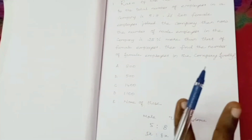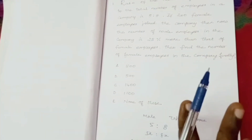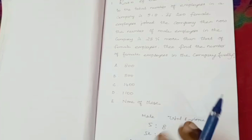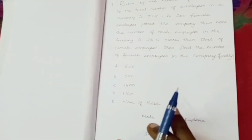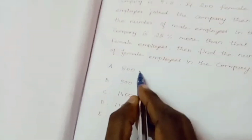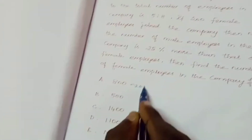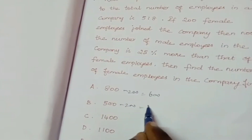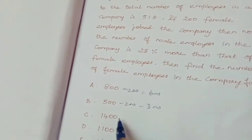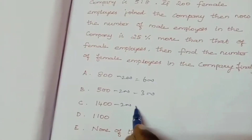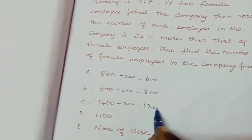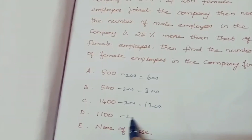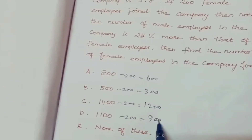If you choose 3 shares, those are female employees. Female employees total is divided into 3 shares. Checking option A: 800 minus 200 is 600; for B: 500 minus 200 is 300; for C: 1400 minus 200 is 1200; for D: 1100 minus 200 is 900. Almost every option's number is divisible by 3.